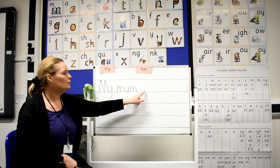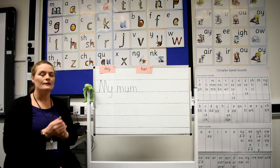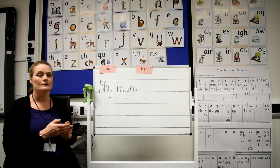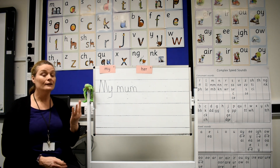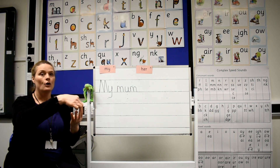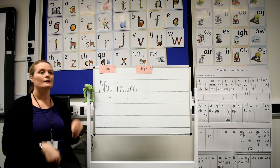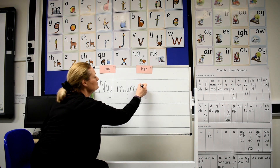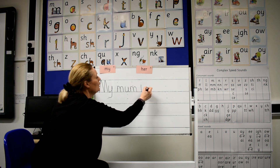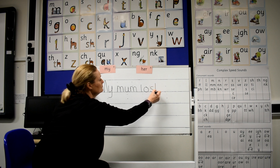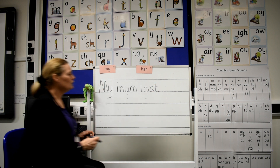My mum lost — Fred fingers, let's sound out the word lost. Show me your fingers. Well done, four Fred fingers. Let's pinch the sounds: L, O, S, T. Well done. Finger space. L... O... S... T. Lost.